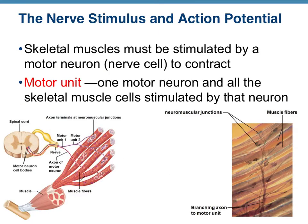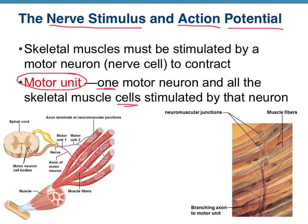The nerve impulse or the stimulus that is sent by a neuron is called an action potential — that's the name of the electrical impulse that a neuron sends. The motor unit is the unit that involves one motor neuron — that's really important, one neuron — and all of the muscle fibers or muscle cells that are stimulated by that neuron. As you can see by the diagram, we've got two motor units involved here, either the red one or the blue one, and then multiple muscle fibers stimulated by one particular neuron.